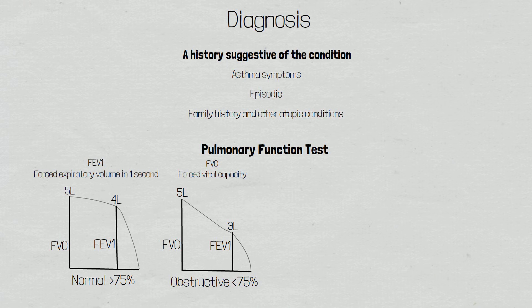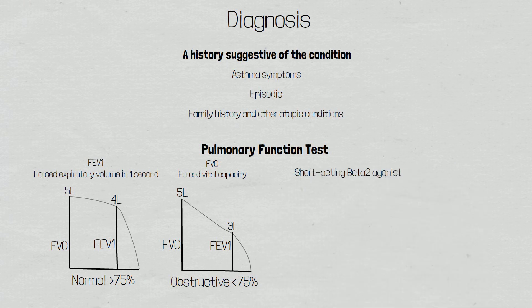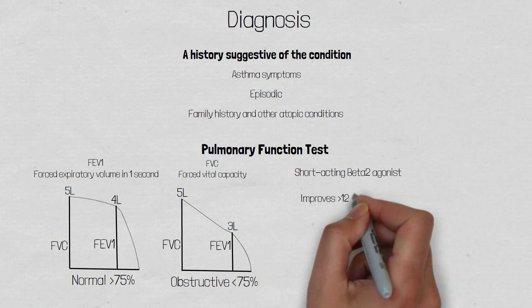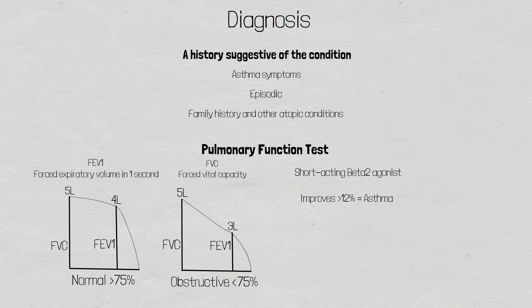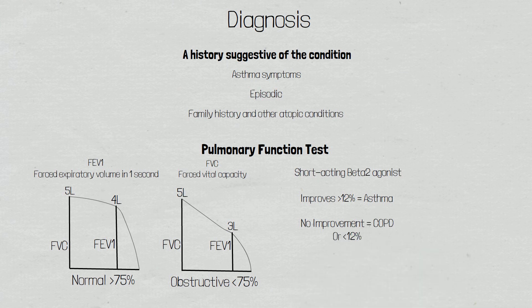We then need to test whether the obstruction is reversible or chronic. This is done by giving the patient a short-acting bronchodilator and repeating the test. If the forced expiratory volume in one second improves by 12% or more, then the diagnosis is asthma, because we have managed to reverse the obstructive pathology. If it does not improve, or it is less than 12%, then it's a chronic condition, and the diagnosis would be COPD. As previously mentioned, asthma is asymptomatic when the patient is not experiencing an acute attack, and therefore their pulmonary function tests may be normal, so a reaction may need to be provoked with a methacholine challenge.